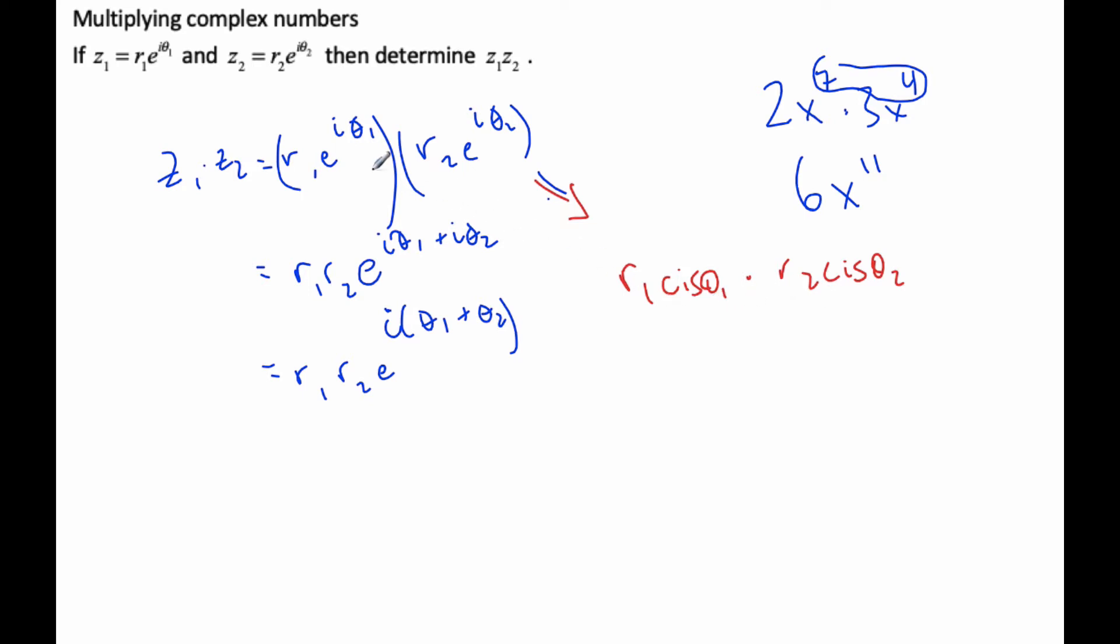if I'm going to multiply those, I could convert to Euler's form, and then if I convert these back, it ends up being r1 r2 cis theta1 plus theta2.